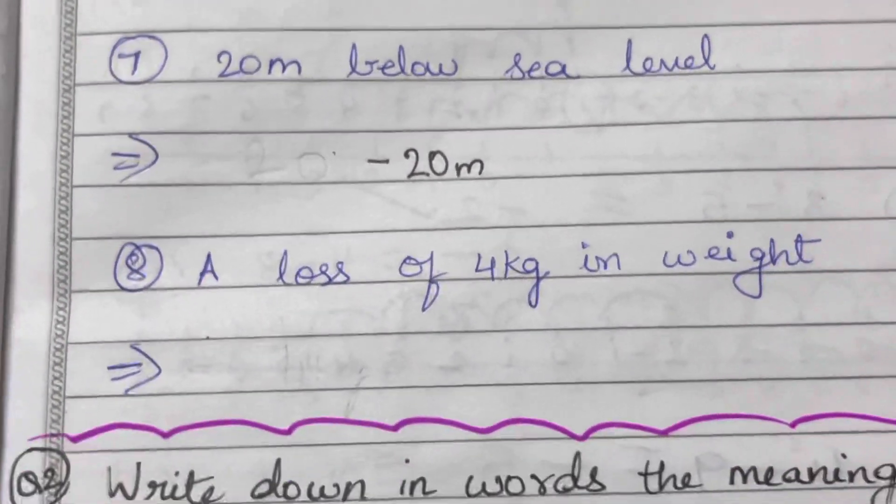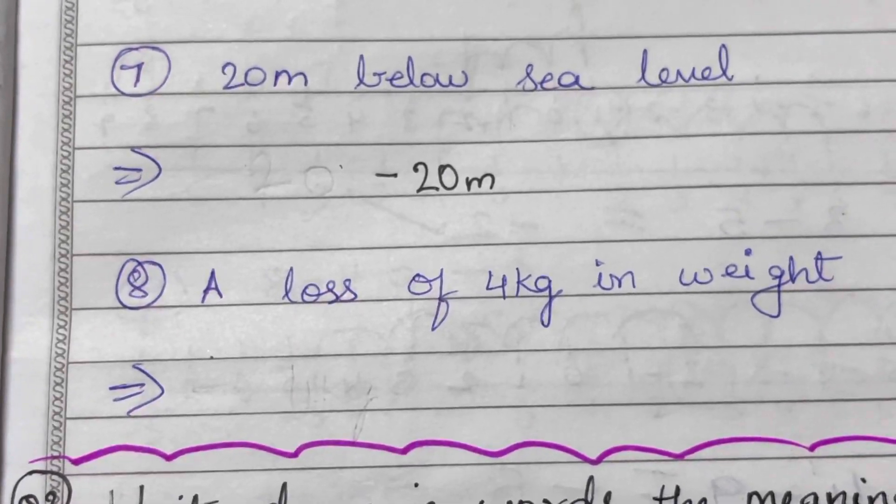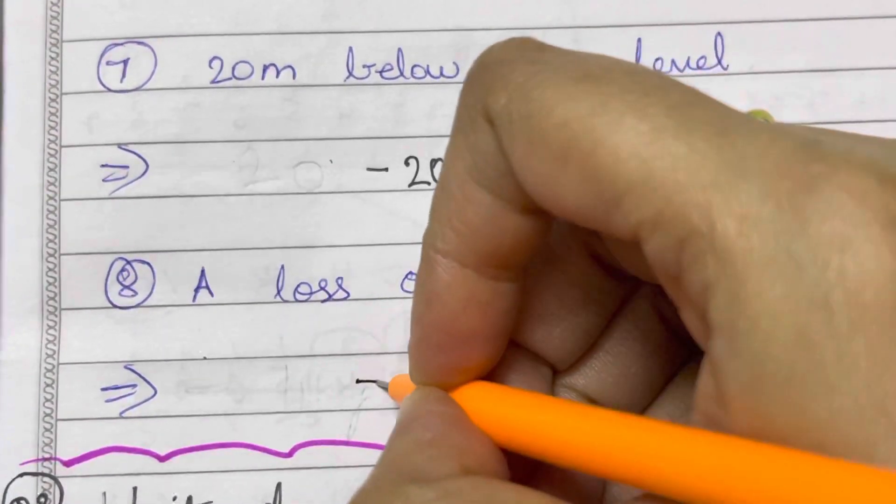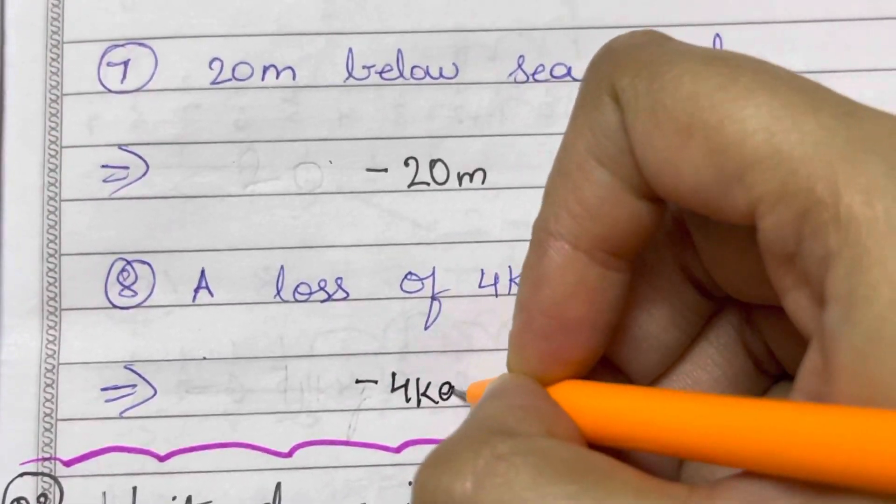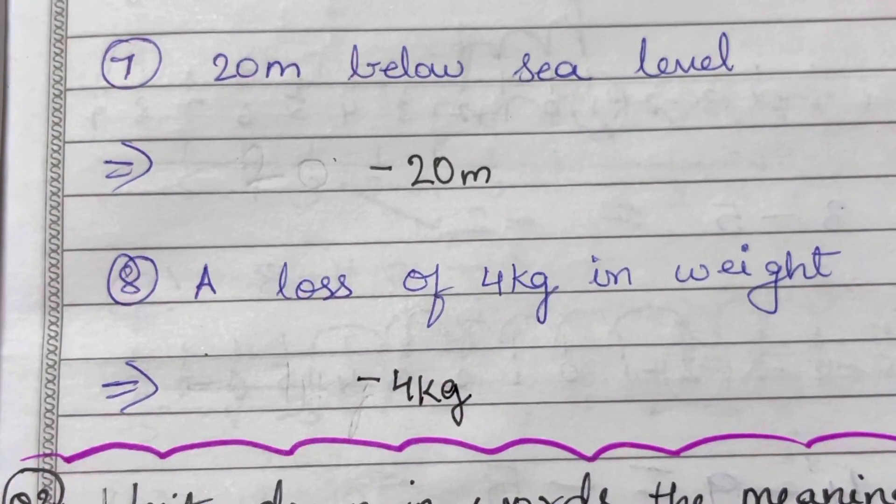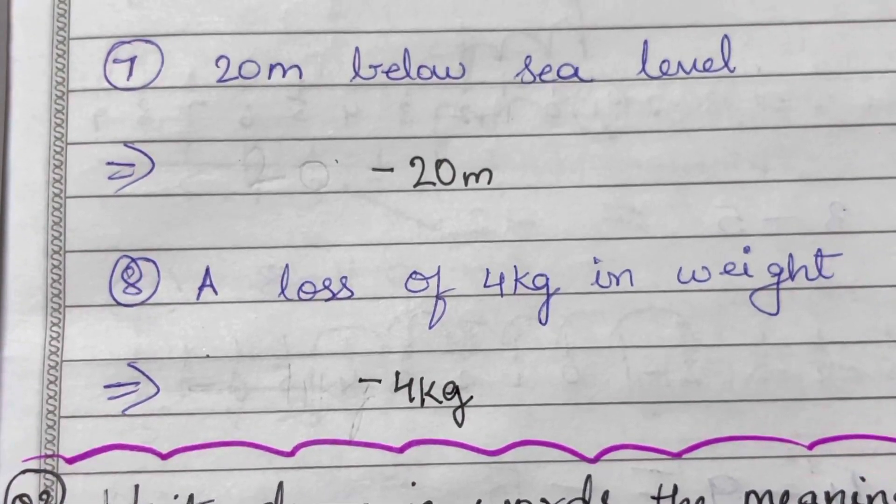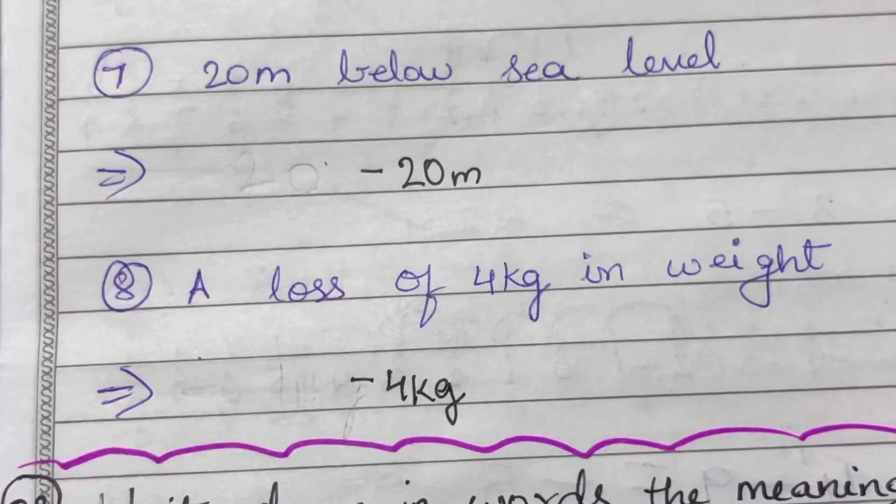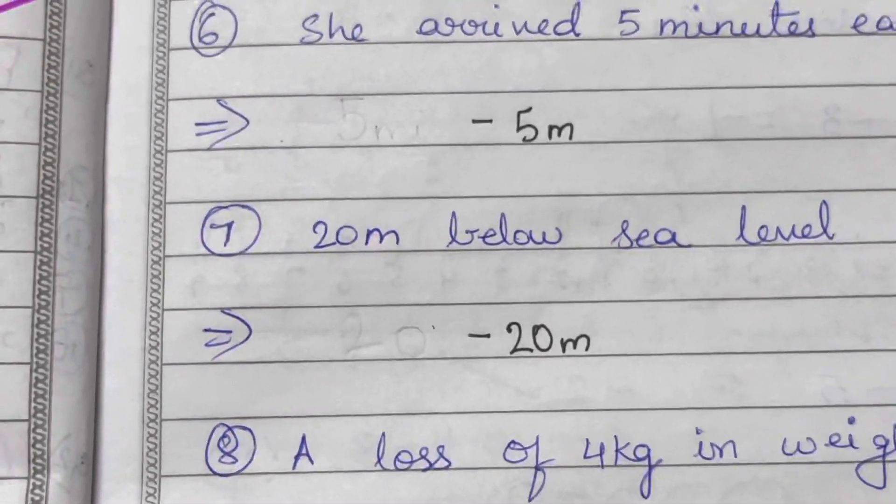Now a loss of four kilograms in weight. So whenever there's a loss, we indicate with a negative sign - negative four kilograms, absolutely right. And if it is a gain of weight, we indicate with a plus - positive number, that is plus four kilograms. This is how you write the directed numbers for the situations given.